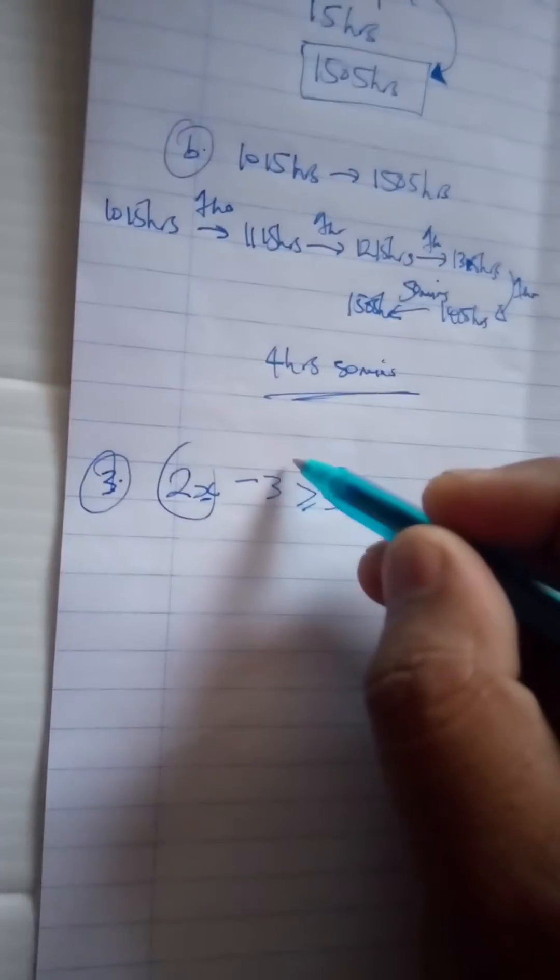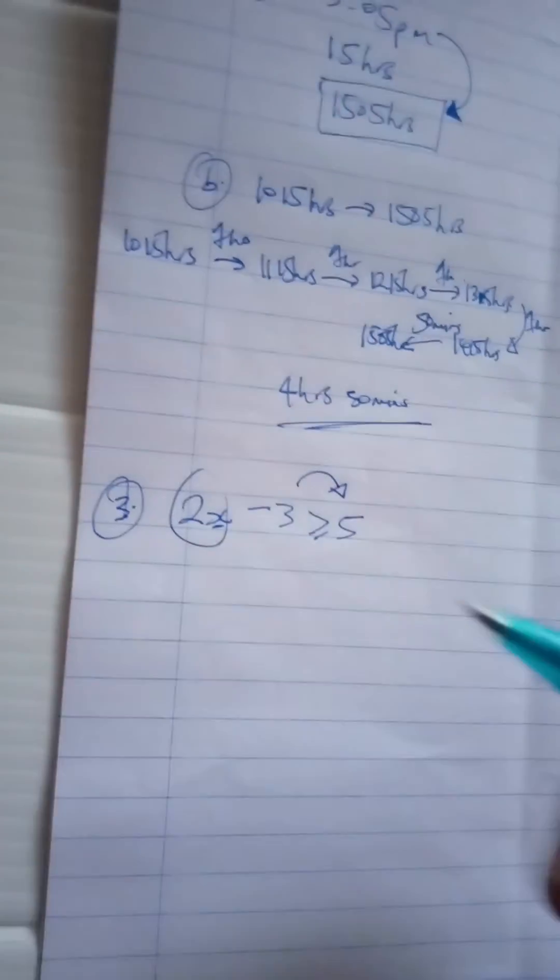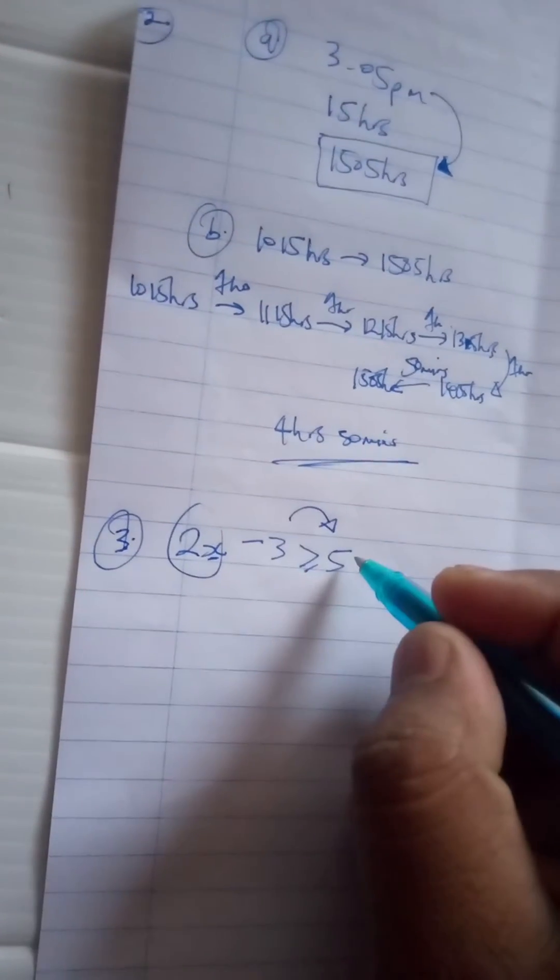What we're going to do is take the 3 to this side of the inequality and then divide by 2. When we take the 3 to this side, it's going to be positive because we are adding on this side.